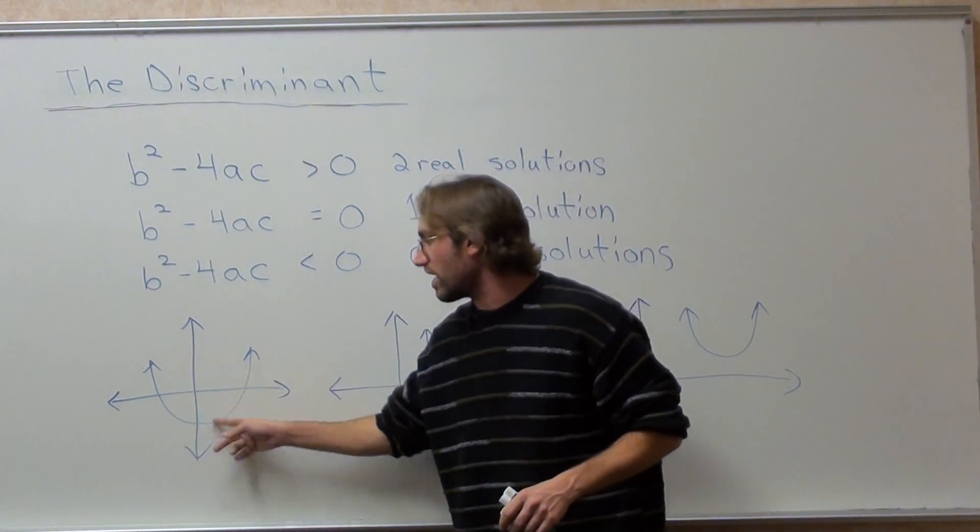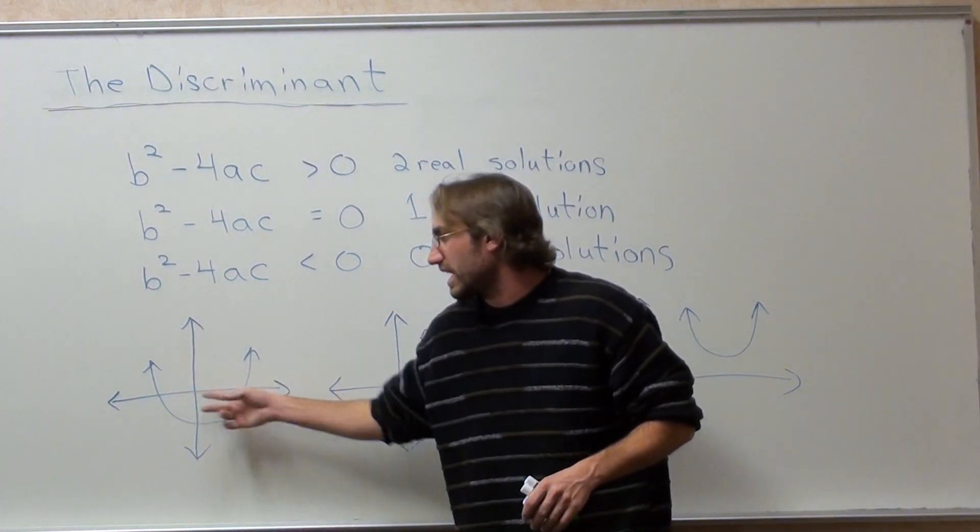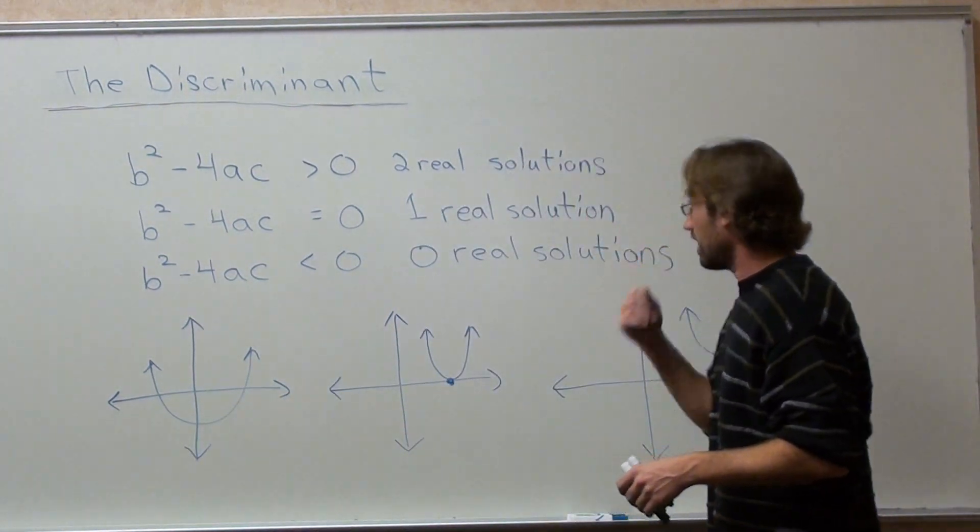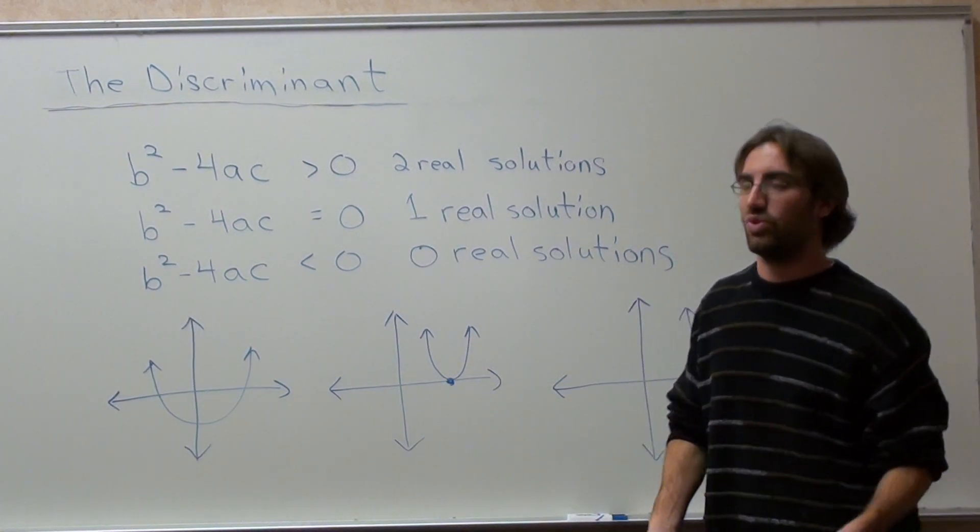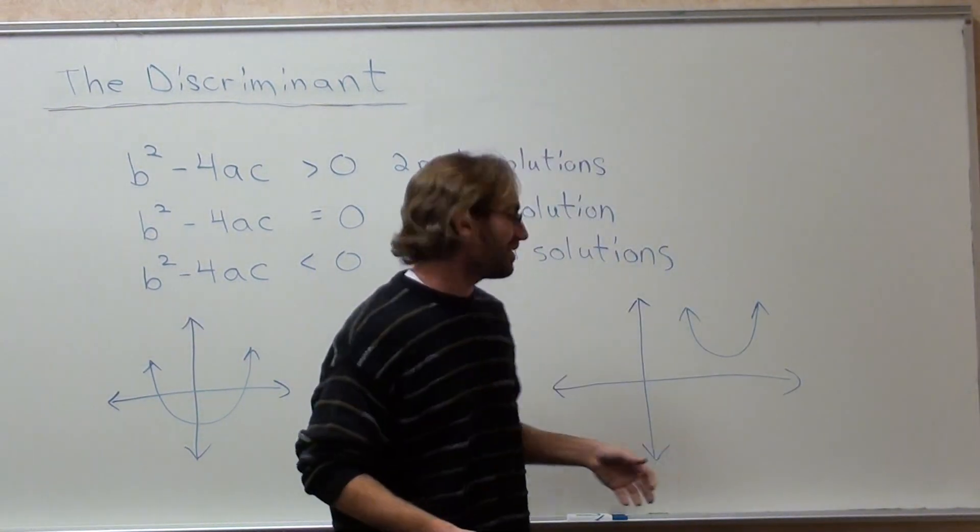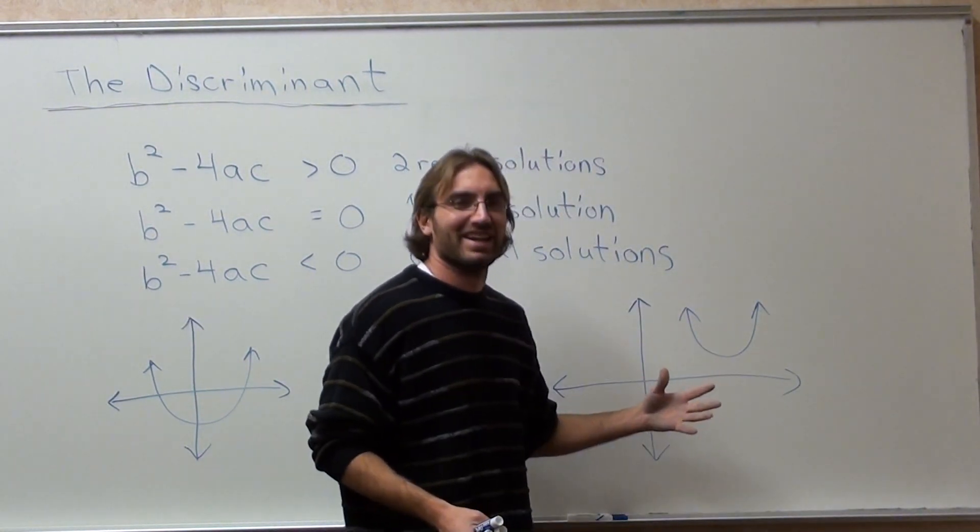If you have two real solutions, your graph is going to look something like this. It's going to hit the x-axis twice. If you have one real solution, your graph is going to look something like this. It's going to hit the x-axis once. And if you have no real solutions, it's not going to hit the x-axis.